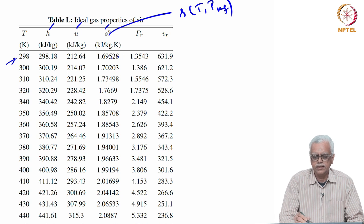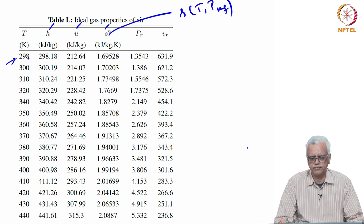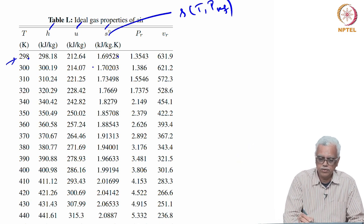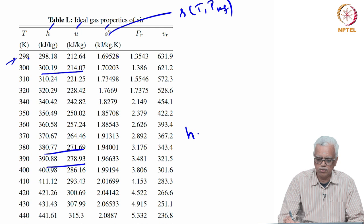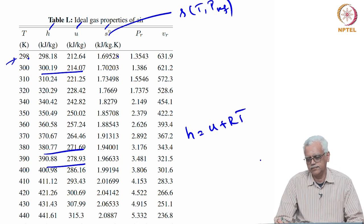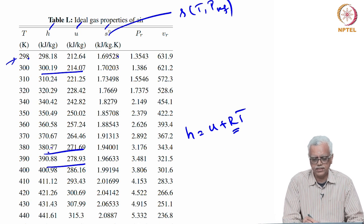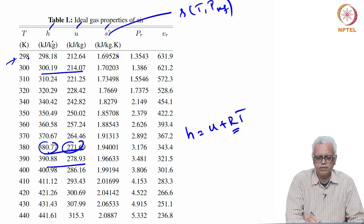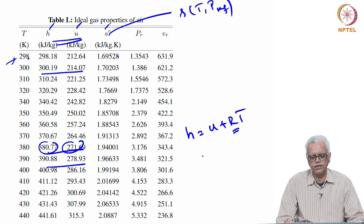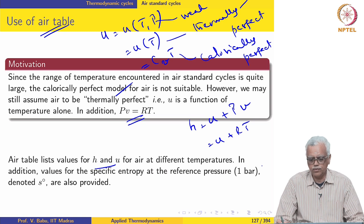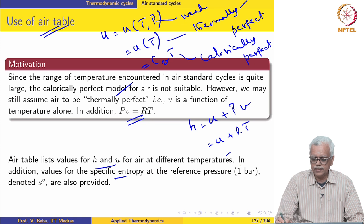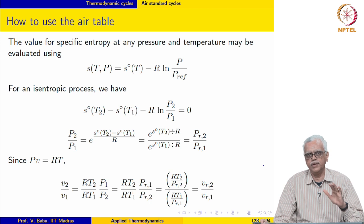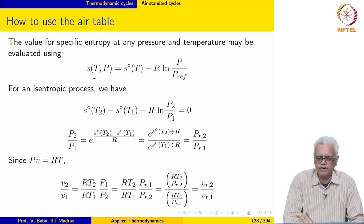In keeping with the thermally perfect assumption, H and U are both functions only of temperature. The air table lists values for H and U for air at different temperatures, and values of specific entropy at the reference pressure are also provided. The value for specific entropy at any other pressure but the same temperature may be evaluated from the TDS relationship. From TDS = dH − V dP, dividing by T gives ds = dH/T − V/T dP, and using PV = RT so V/T = R/P, we get ds = dH/T − R dP/P.